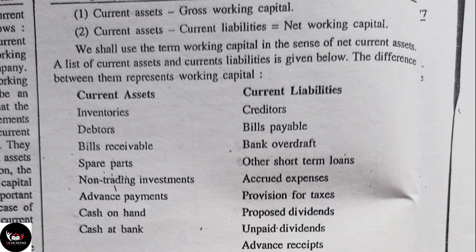Current liabilities include creditors, bills payable, bank overdraft, short-term loans, accrued expenses, provision for tax, proposed dividend, and advance received. You have to write all these in the final account — first year, second year balance — and you must know which items fall under current assets and which under current liabilities.